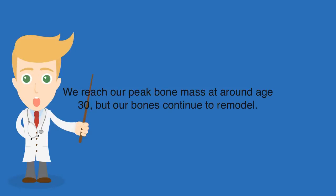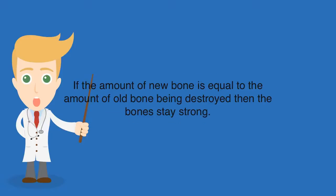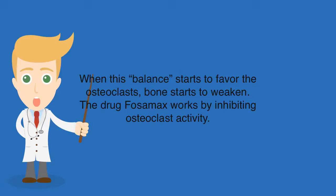We reach our peak bone mass at around age 30, but our bones continue to remodel. Cells known as osteoclasts break down bone — generally old and poorly structured bone — and osteoblasts are cells that come in and lay down new bone. If the amount of new bone is equal to the amount of old bone being destroyed, then the bones stay strong. When this balance starts to favor the osteoclasts, bone starts to weaken. The drug Fosamax works by inhibiting osteoclast activity.